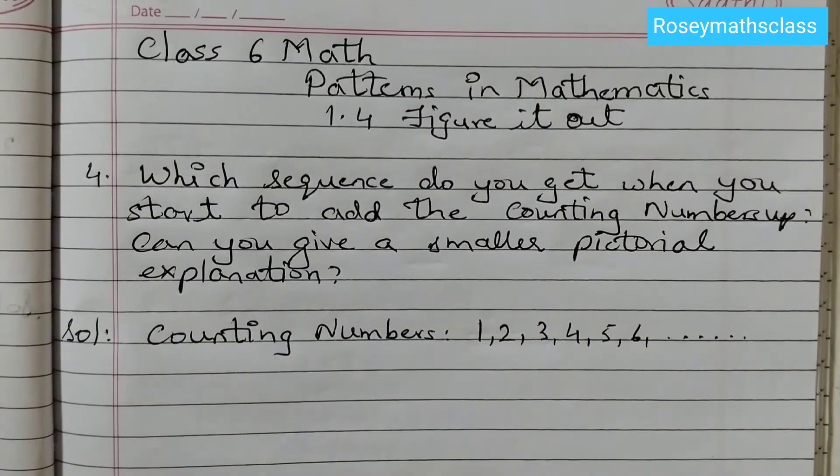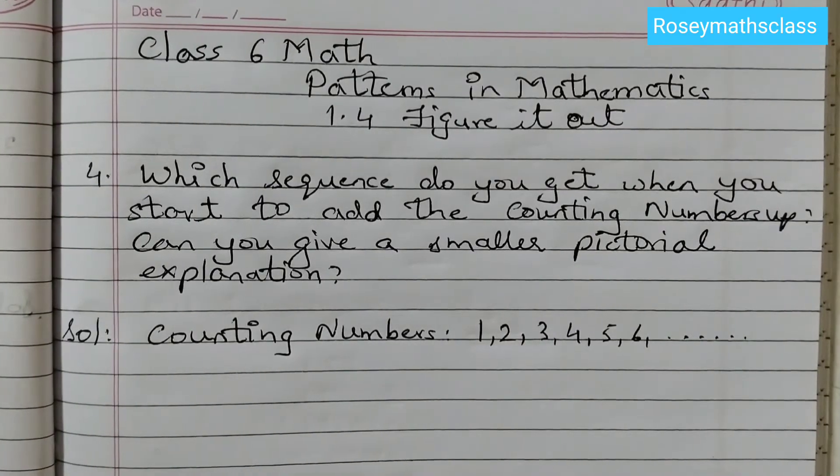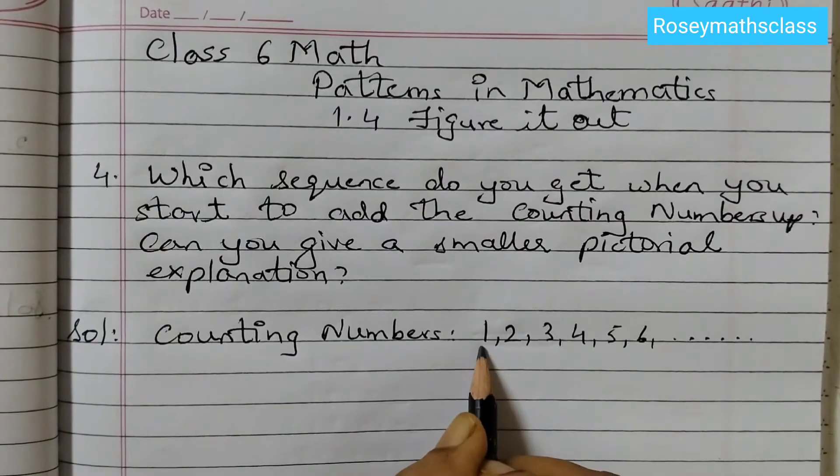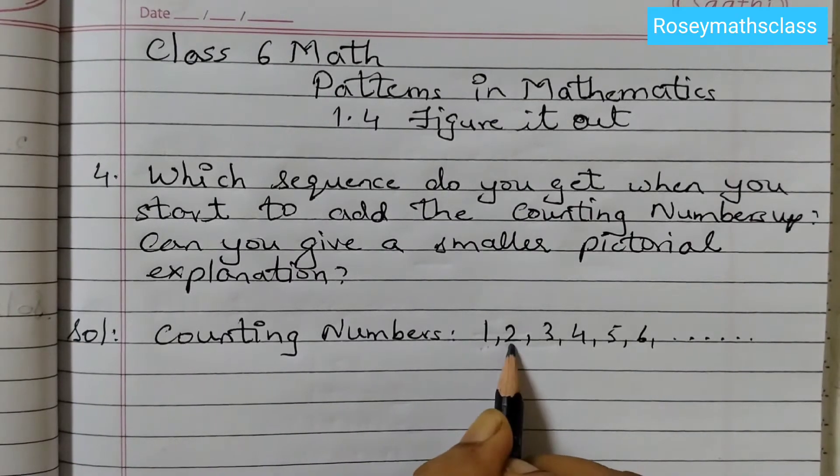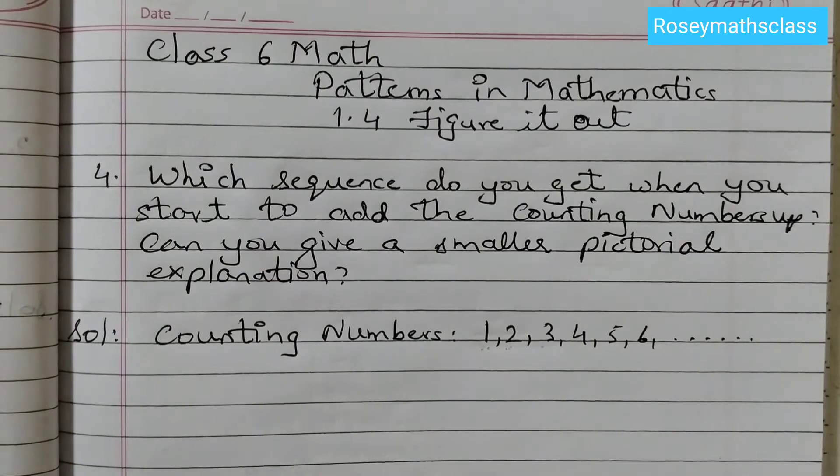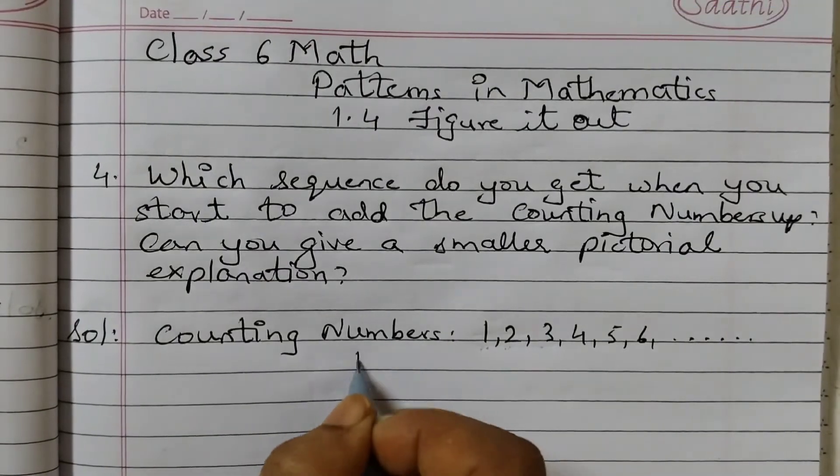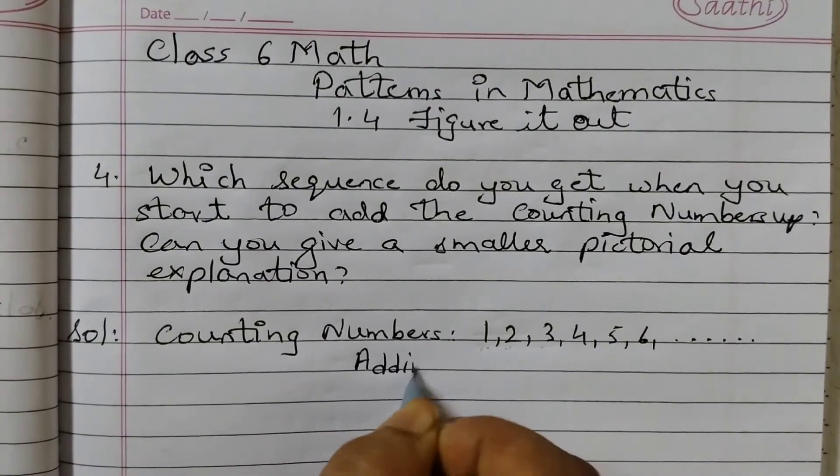Now we will add these numbers up. Up means you have to start from 1. First number will be 1, second number is 1 plus 2, add the next number. Then start from 1 and go till 3: 1 plus 2 plus 3. So let's write it. First one will be, we will just say adding up.